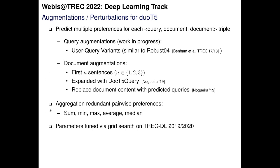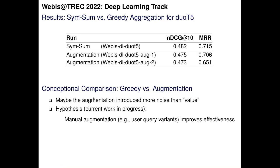We used grid search on Deep Learning 2019 and 2020 to identify the best combination of approaches. Unfortunately, in the evaluation our augmentation strategies decreased effectiveness, both in terms of NDCG@10 and mean reciprocal rank. The augmentation likely introduced more noise than value. Our current work-in-progress hypothesis is that manual augmentation — for example, with manual user query variants — would improve effectiveness, and this is something we want to study next.